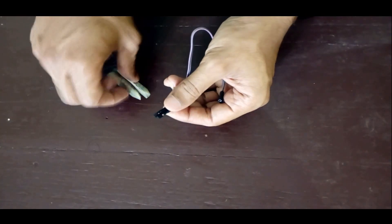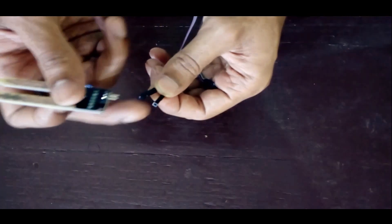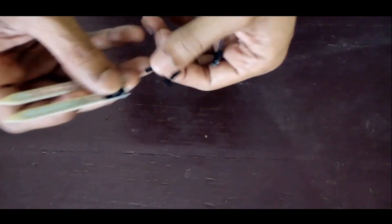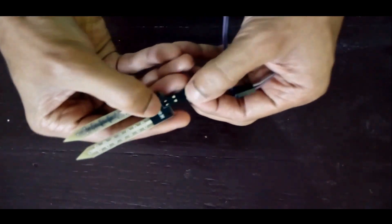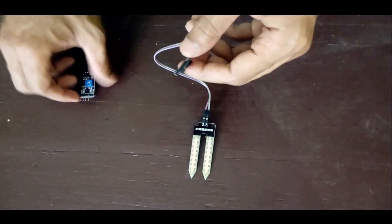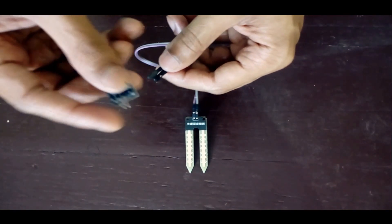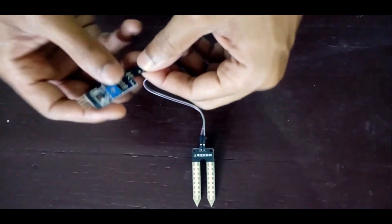This is a female to female jumper wire. I'll show you how to connect the probe and module together. Now, take the probe and insert the two heads of this female jumper wire into the male head of the probe. Now, take the module and insert the two male heads of the module into the female heads of the jumper wire.